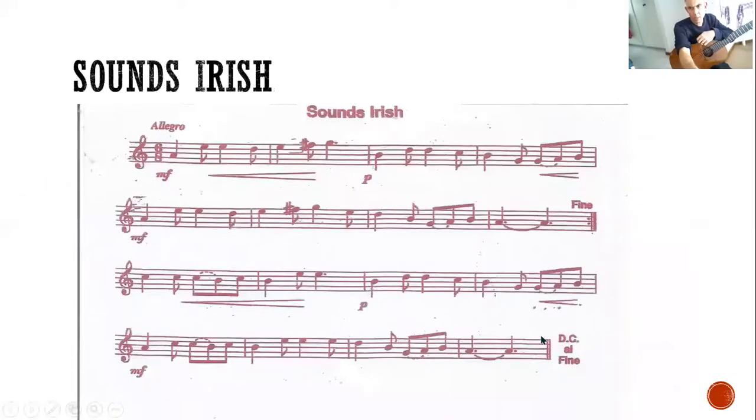We're going to play a piece called Sounds Irish. It's Allegro, key signature is in A minor. Look out for the dynamics: mezzo forte, loud. Piano, soft. Hairpin crescendo. Fine, finish. DC al fine, from the beginning and then end at fine. Let's have a go.